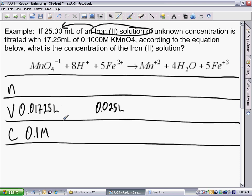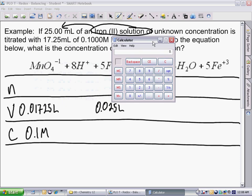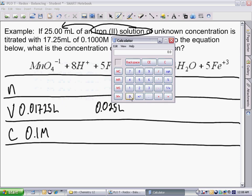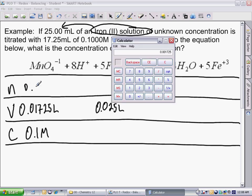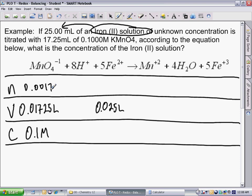Using our concentration and our volume, we can now calculate the moles of our known. So, 0.01725 times 0.1 equals 0.001725 moles.